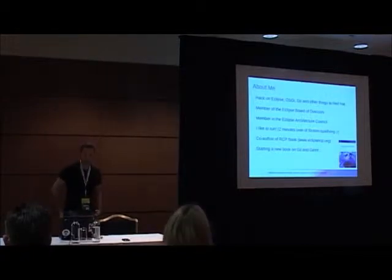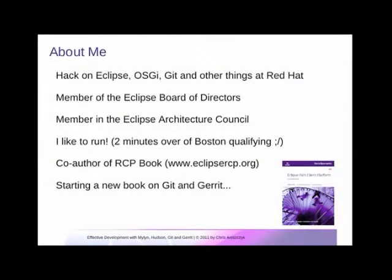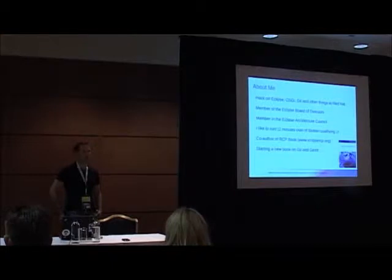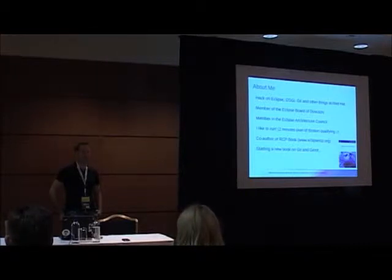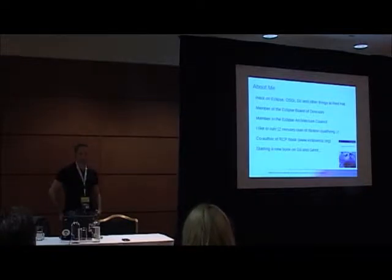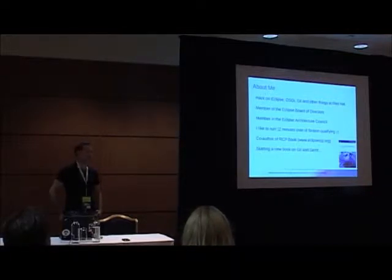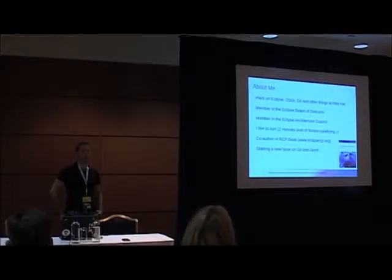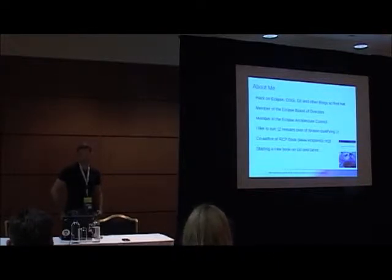A little bit of background about me. My name is Chris Aniszczyk. I currently work at Red Hat. I have a small team of engineers that work on Eclipse and other open source technology. My particular background is I've been with Eclipse for a long time — almost a decade now. Eclipse actually celebrates its 10th year anniversary later this year. Big background in OSGi. The past few years I've been focusing on Git because at Eclipse.org we're moving to Git. I sit on the board of directors. I like to run. I co-authored the RCP book and I'm recently starting a new book on EGit and Gerrit.